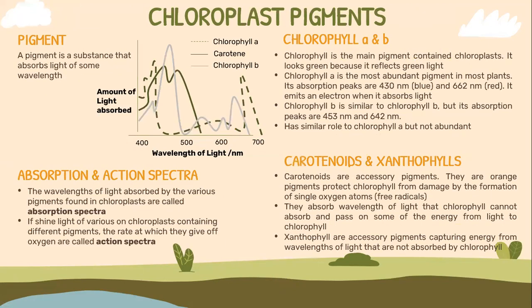Let's look into chloroplast pigments. A pigment is a substance that absorbs light of some wavelengths. The wavelengths of light absorbed by the various pigments found in the chloroplast are called absorption spectra. If you shine light of various wavelengths on chloroplasts containing different pigments, the rate at which they give off oxygen is called the action spectra. Let's look at the differences between chlorophyll A and chlorophyll B. Chlorophyll A is indicated by the dotted line and chlorophyll B is indicated by the gray line.